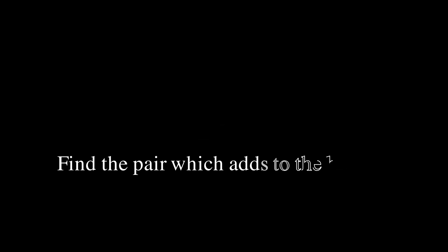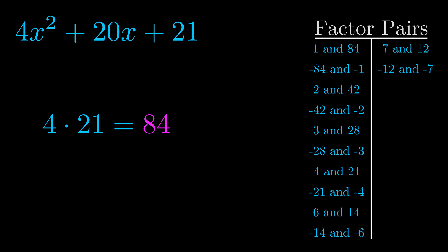The b value is the coefficient on the x term. That's the middle term, the one that we haven't done anything with yet. And really this is the only factor pair that we need.